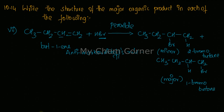As per anti-Markovnikov's rule — how do you identify it? In the presence of hydrogen bromide, you will have a peroxide as the reagent, which will follow the anti-Markovnikov's rule. So 1-bromobutane is the major product for this reaction following anti-Markovnikov's rule. Thank you.